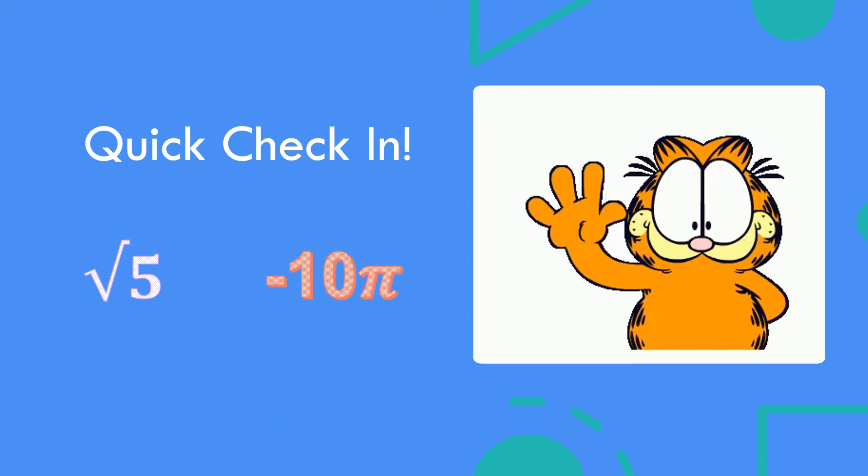Good job. What about negative 10 over pi? Yes, any rational number multiplied by an irrational number such as pi is an irrational number. Good job.